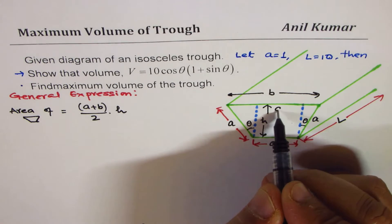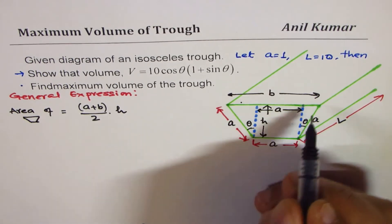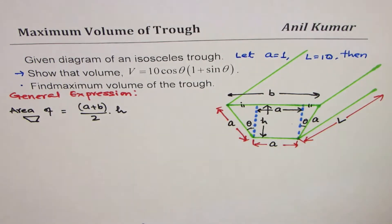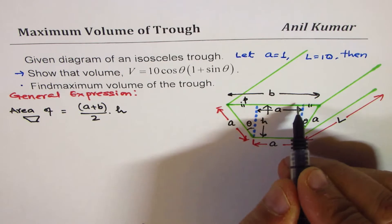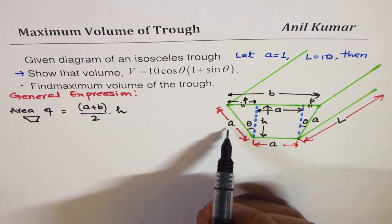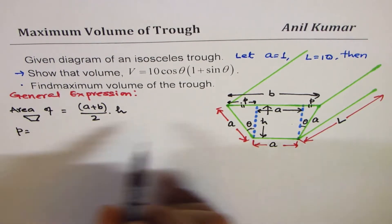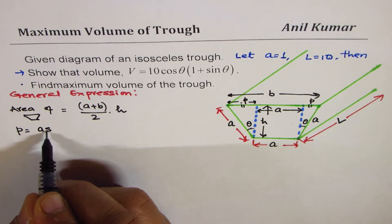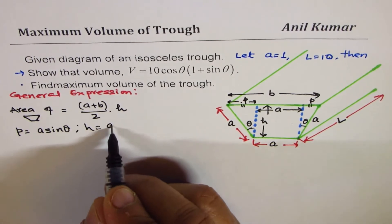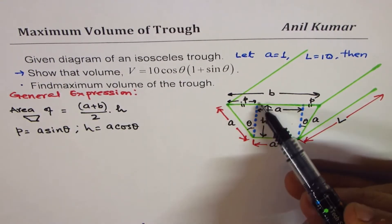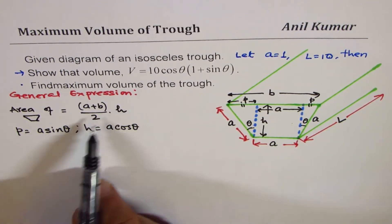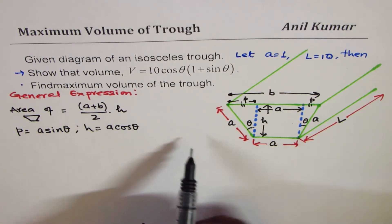From the diagram, b equals a plus two equal side extensions — let's call each of those p. Since theta is the angle at the base and the hypotenuse is a, the opposite side p equals a sin theta, and the height h equals a cos theta. Adjacent side is cosine, opposite side is sine.